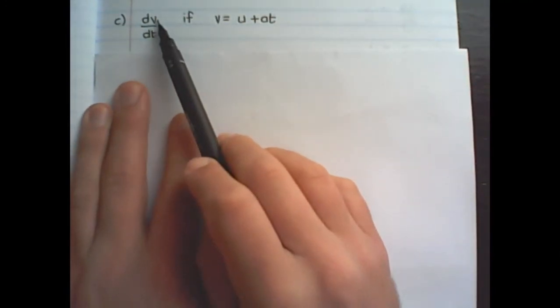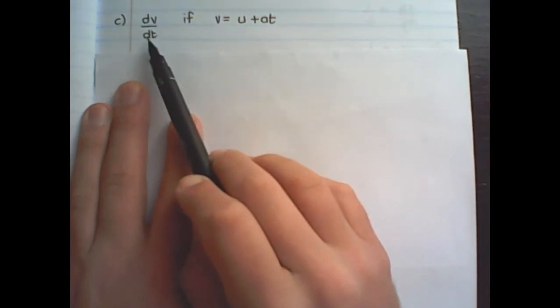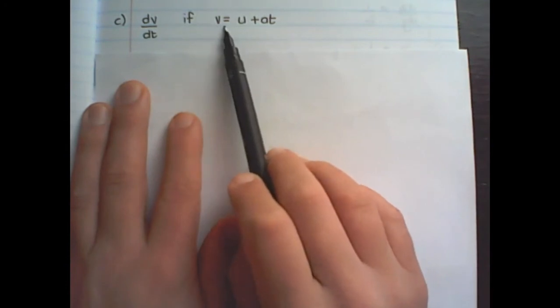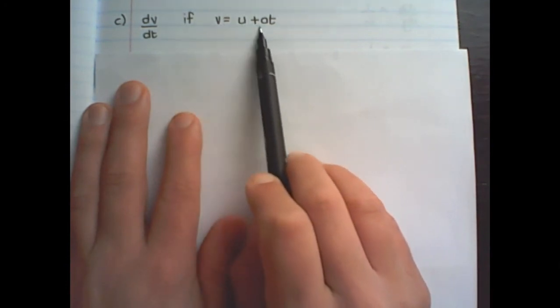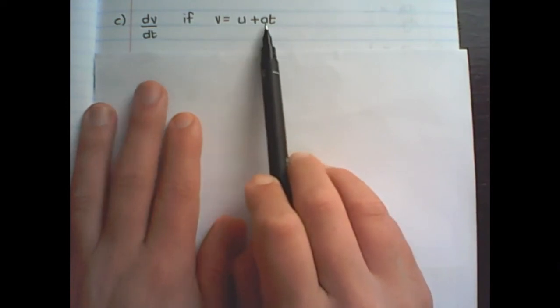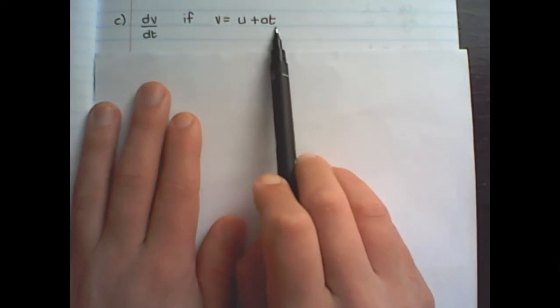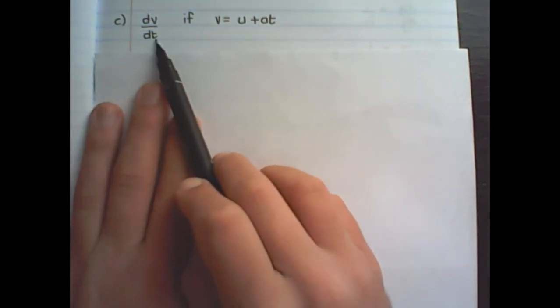Let us find the derivative of the function v towards dt. Notice in this expression we have v equals to u plus at. So we have three different variables but we want to differentiate only towards t.